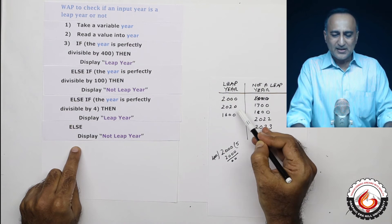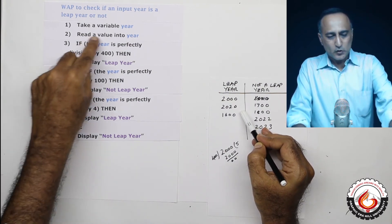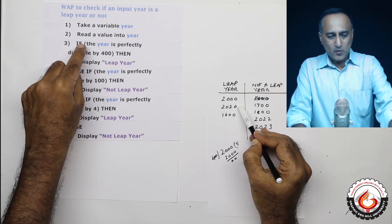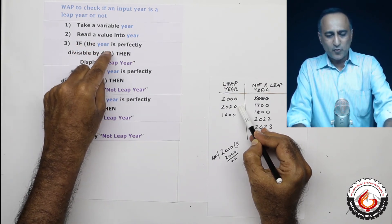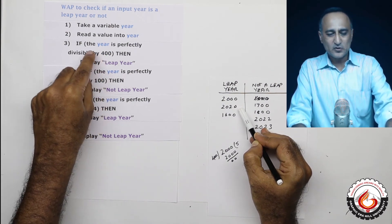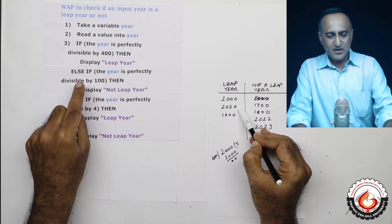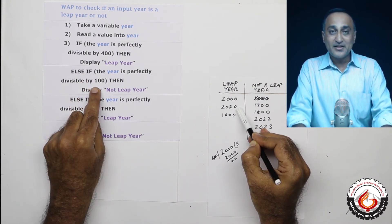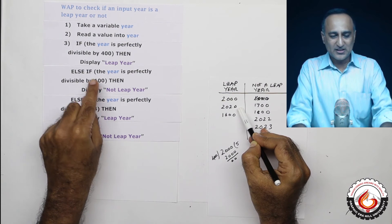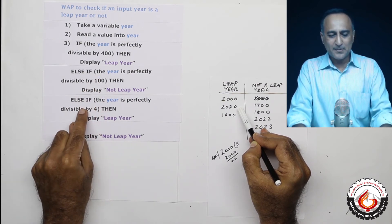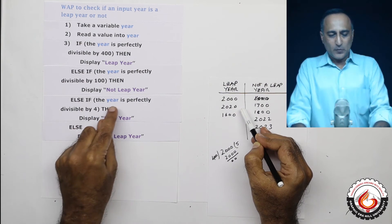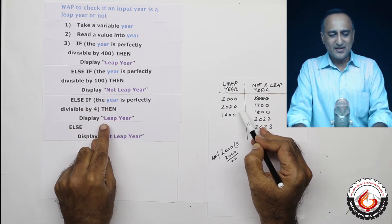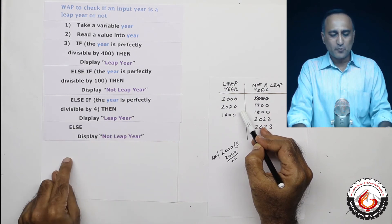Now let's look at the year 2020. I read the value; year is 2020. Is 2020 divided by 400 giving remainder 0? No — the remainder is 20, so the first condition is false. I move to the else-if: 2020 divided by 100 also gives remainder 20, so that condition is false too. Then 2020 divided by 4 gives remainder 0, so I print 'leap year'.